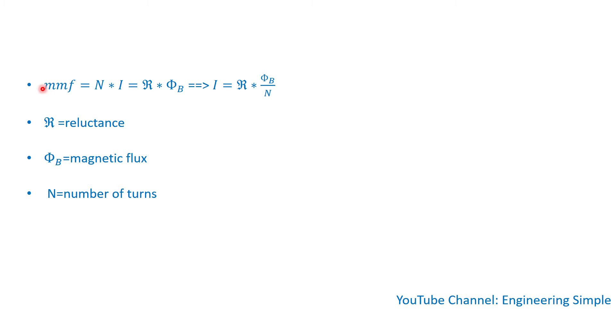The MMF or magnetomotive force is equal to ampere turns or number of turns times current, which is also equal to reluctance times the flux.